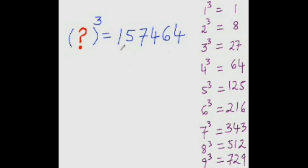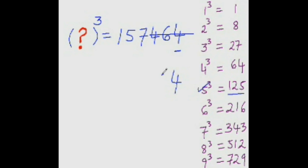Now let's find the cube root of the next number. Look at the last digit — it is 4, which is not part of any conjugate pair, so copy 4 as it is and strike out the last three digits. The number left is 157. Find the number whose cube is either 157 or less than that — it is 5, because 5 cubed is 125. So write 5 here; the answer is 54.